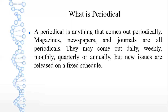New issues are released on a fixed schedule. For example, there is a journal that is quarterly, meaning every three months. A magazine comes out every month. And there is a daily or weekly newspaper. So these are called periodicals — they are published monthly, quarterly, or annually, but always on a fixed schedule.